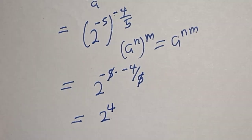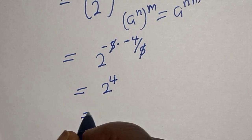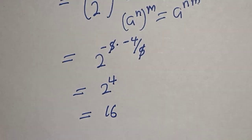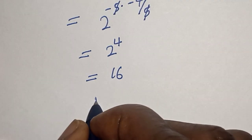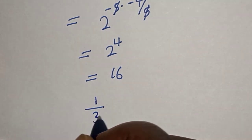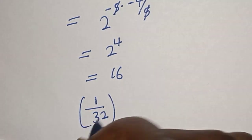And 2 raised to power 4 is equal to 16. Therefore, 1 over 32 raised to power minus 4 over 5 is equal to 16.